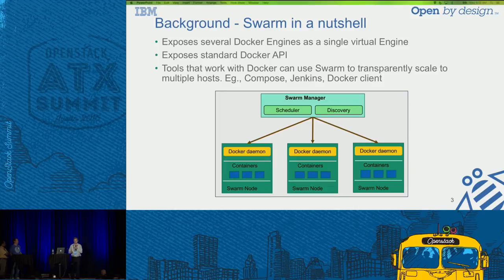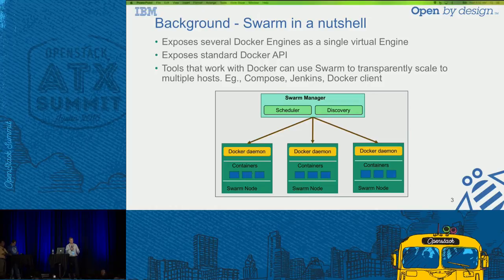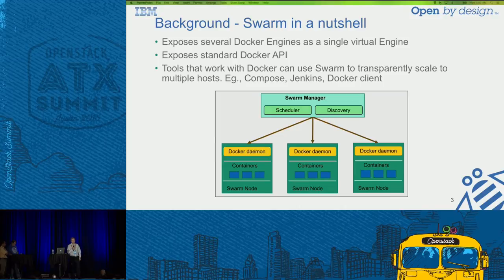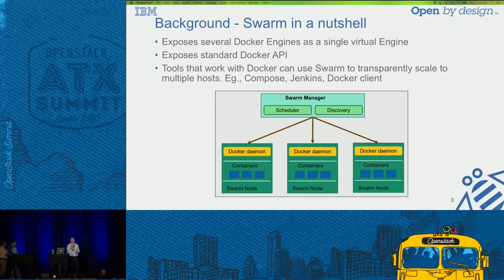Let's talk about Swarm. Essentially, Swarm is a way, when you have a number of hosts running the Docker engine, to expose all of them as a single virtual engine. It provides a standard Docker API, which is important because you can use standard Docker tools — Docker Compose, Docker CLI, Jenkins. All these tools work out of the box, providing the same familiar experience to Docker developers. Swarm provides the way to schedule containers across different hosts.